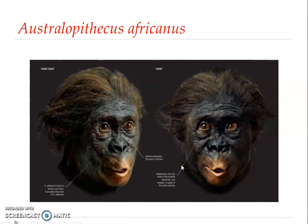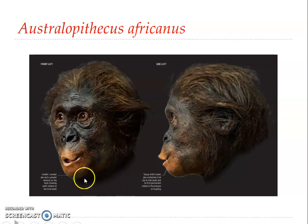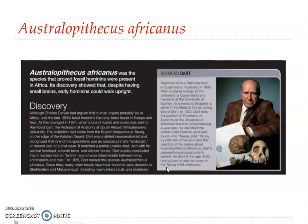The cheekbones of Australopithecus africanus are not very wide, and the distance between the eyes is narrow. Its face is shorter and more human-like than that of primitive ancestors. The Taung Child specimen showed that fossil hominins were present in Africa, and its discovery showed that despite having small brains, early hominins could walk upright.